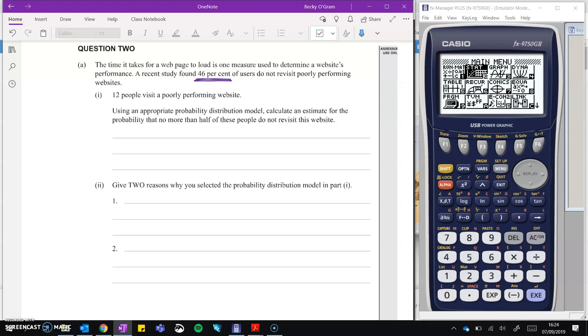Using an appropriate probability distribution model, calculate an estimate for the probability that no more than half of these people do not revisit the website. So this is looking to me like a binomial distribution, since we can term the thing we're looking for into success and failure, and the chance of that being 46%.